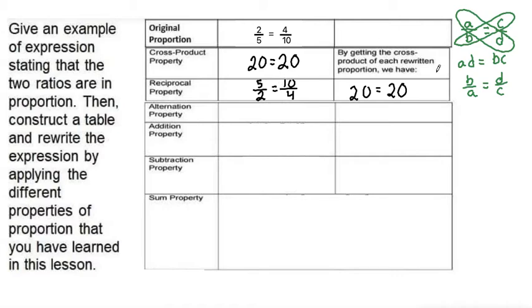Next, the alternation property. The alternation property is a over c is equal to b over d.